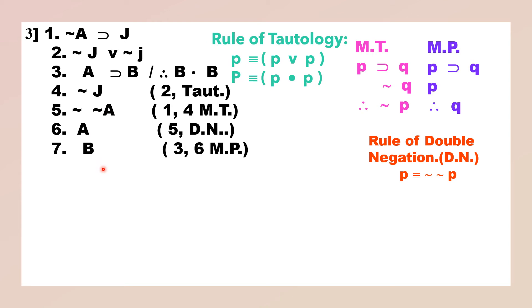So you can derive the consequent, which is B, by the M.P. rule. We want B·D. Thus we have arrived at the conclusion.